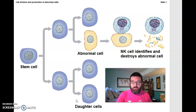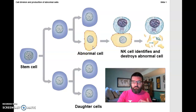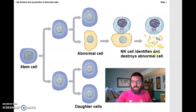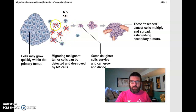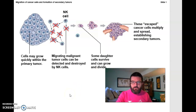Natural killer cells are one of your body's main defenses against cancer. If a stem cell makes a daughter cell with a mutation causing it to divide out of control, that mutation also means a difference in the proteins being produced. Natural killer cells will often recognize that and destroy the abnormal cell before it can cause a tumor. Obviously that doesn't always work — if some cancerous cells survive, they can divide and establish tumors elsewhere in your body, which is called immunological escape. Cancer is a big killer, and we know that while our body has defenses, they are not 100% effective.